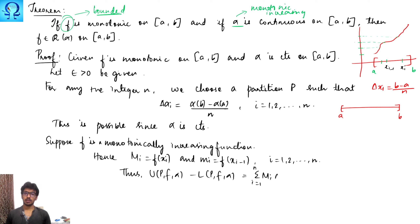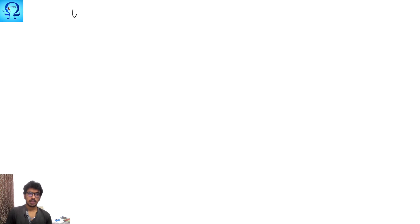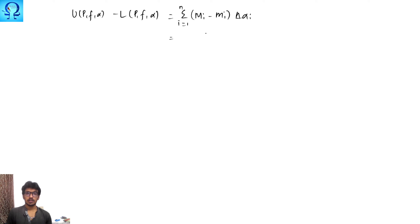Thus, U(P, f, alpha) minus L(P, f, alpha) equals the summation from i equals 1 to n of (M_i minus m_i) times delta alpha i, which equals the summation from i equals 1 to n of (f of x_i minus f of x_{i-1}) times delta alpha i.